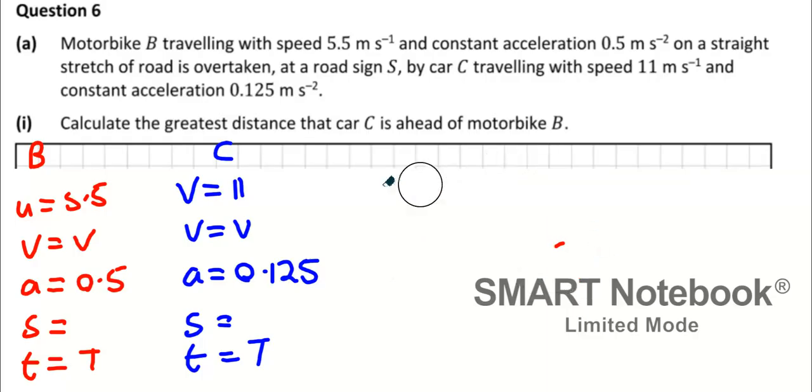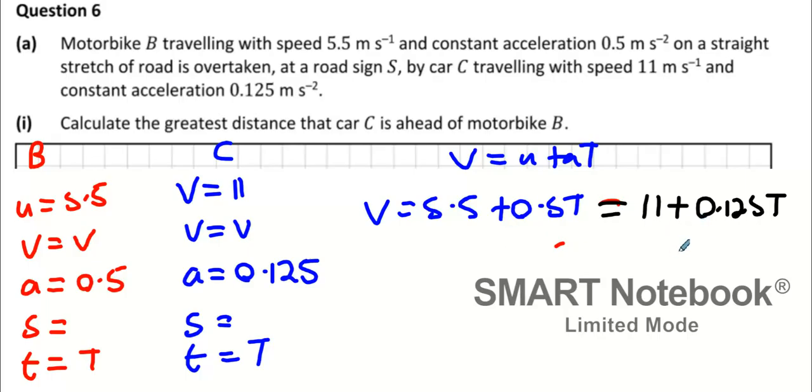We're going to use V equals U plus AT for both. We should get V equals 5.5 plus 0.5T, and that has to equal 11 plus 0.125T. Now 0.5 take away 0.125 is 0.375T, 11 take away 5.5 is 5.5, therefore T is 5.5 divided by 0.375.